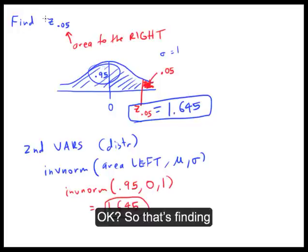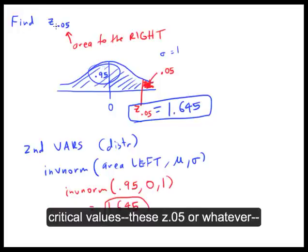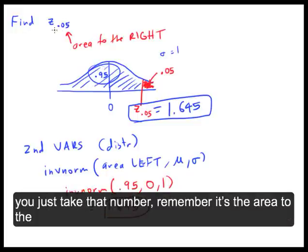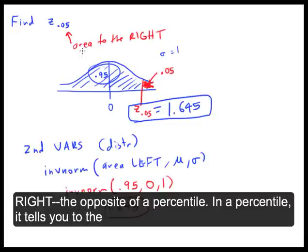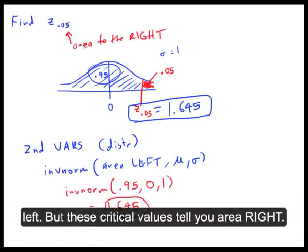So that's finding critical values — finding the Z sub whatever. You just take that number. Remember, it's to the right. It's the opposite of a percentile: in a percentile, it tells you the area to the left, but these critical values tell you the area to the right.